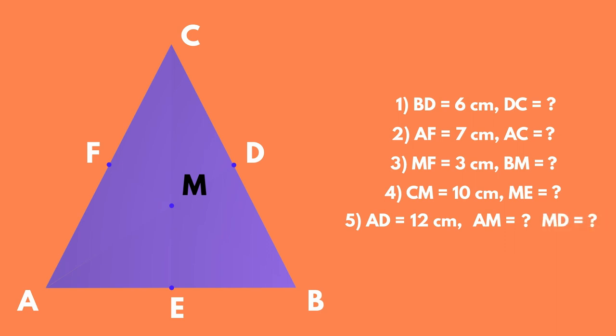Answers. AD is the median of the triangle starting from the vertex A to the midpoint D of the opposite side BC. That means DC equals BD equals 6 cm. BF is the median of the triangle starting from the vertex B to the midpoint F of the opposite side AC. That means AC equals 2 AF equals 14 cm.